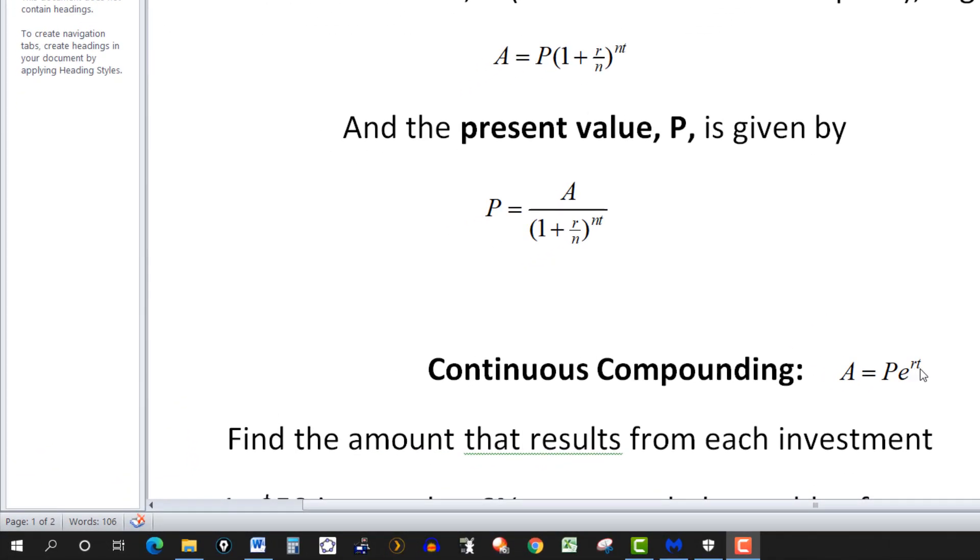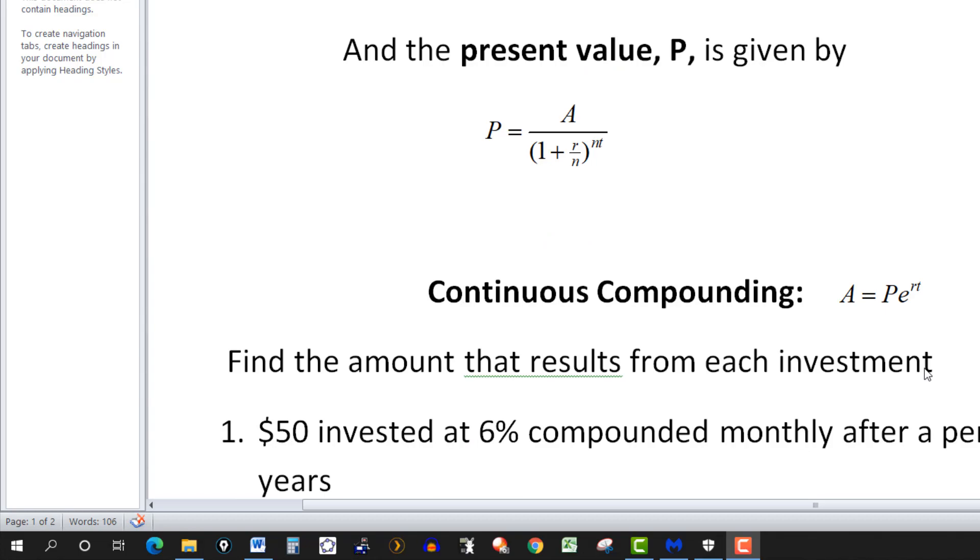R again is the given rate, and T is the time in years. So let's look at some examples.